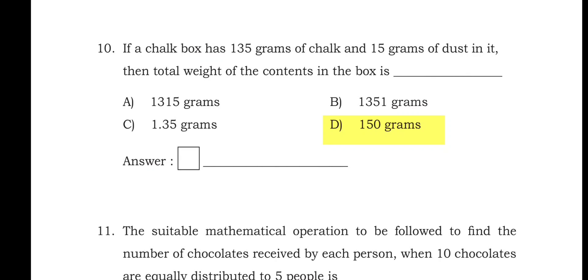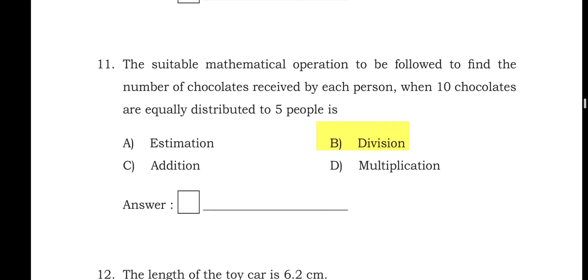Question 10: if the chalk box has 135 grams of chalk and 15 grams of dust, the total weight of the contents is — we add them up: 135 g + 15 g = 150 grams. Option D is the right answer: 150 grams.